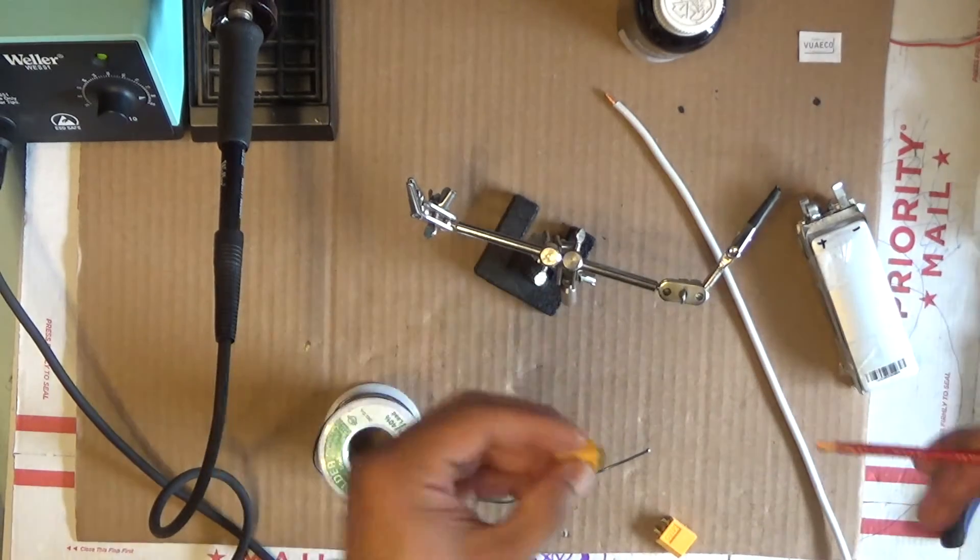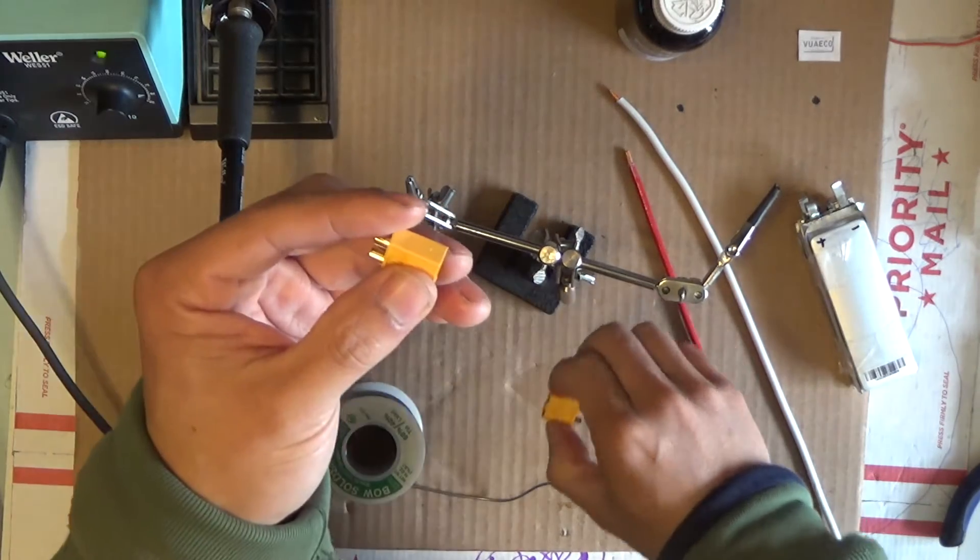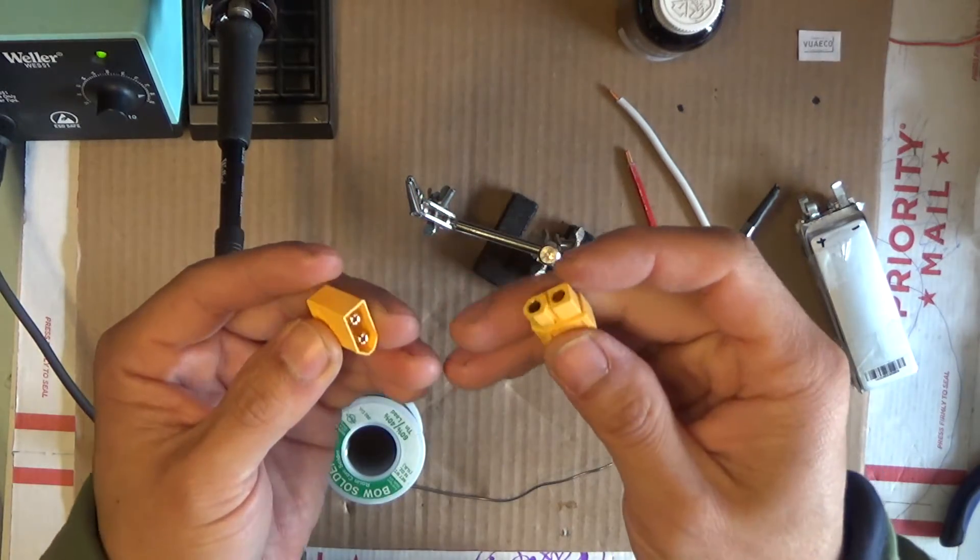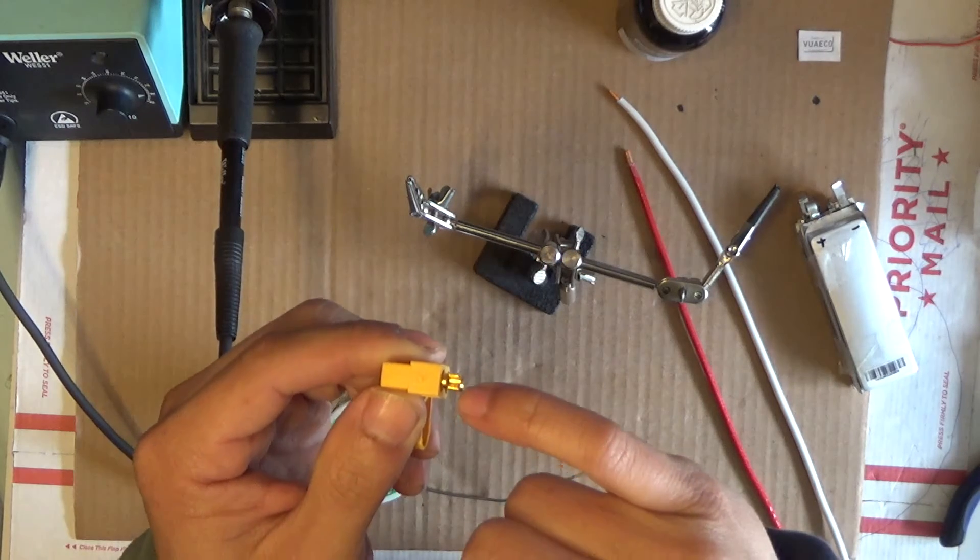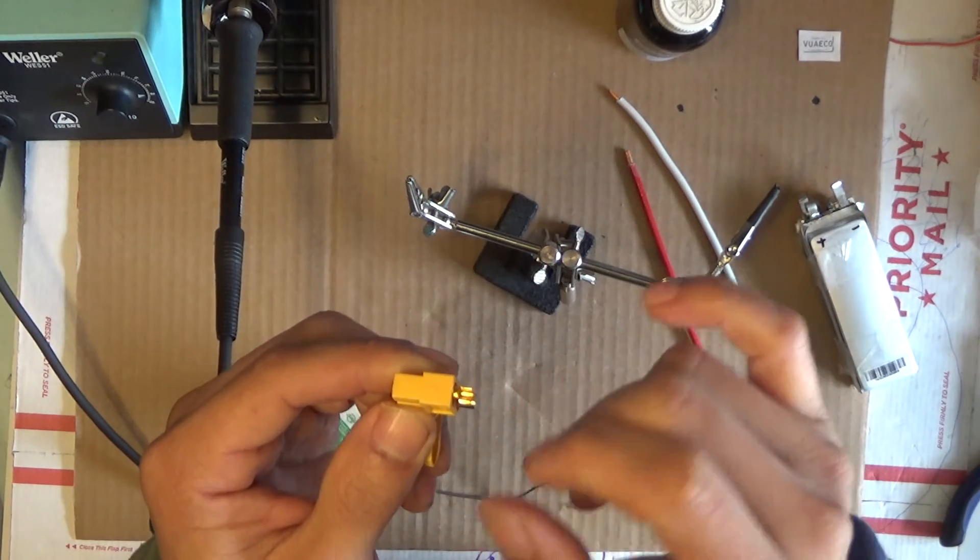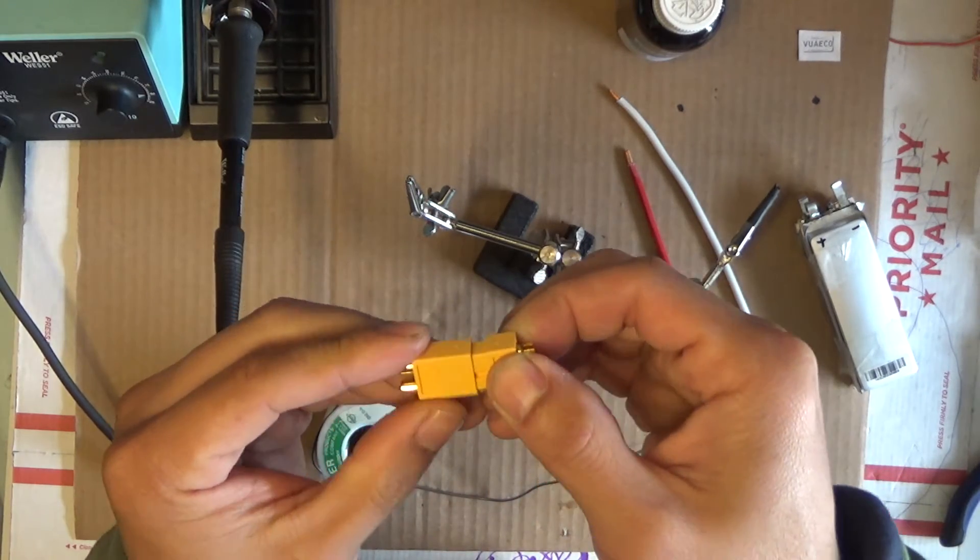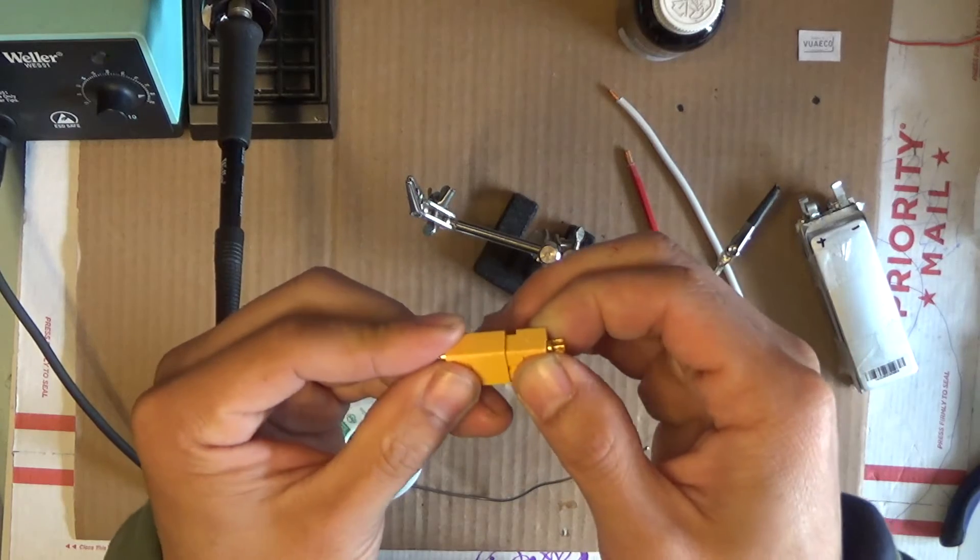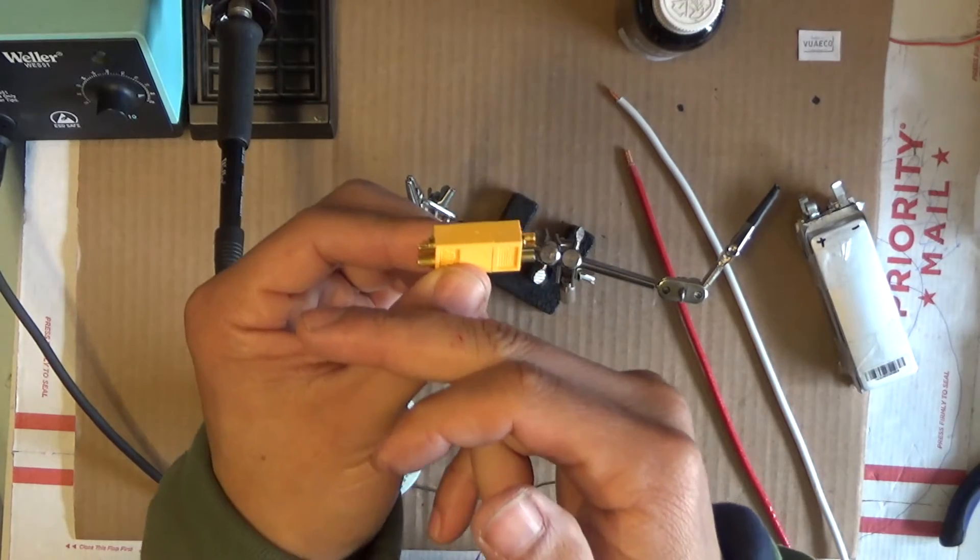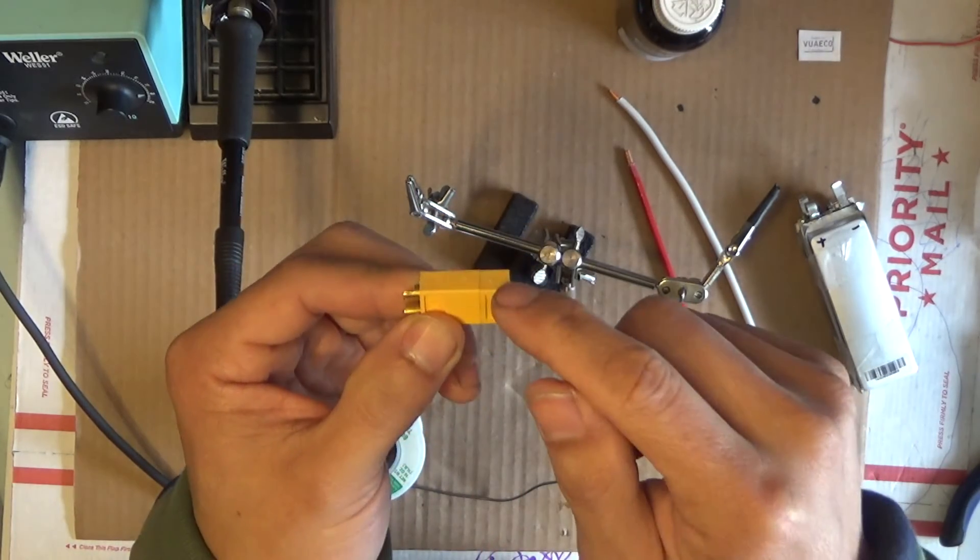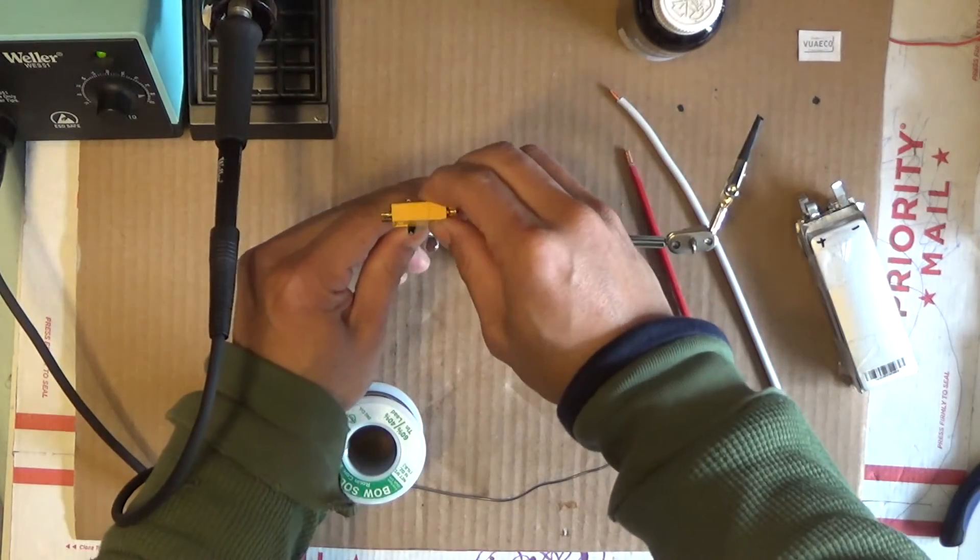Okay, and to solder this you might need the other connector, the male connector. This serves as a heat sink, because when you solder onto here it's gonna get really hot and it might melt the plastic. So you want to use another connector, hook it up like this, so the other connector will serve as a heat sink, so it will draw the heat away from the connector so it won't melt the plastic. I got my third hand here ready to solder.